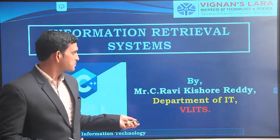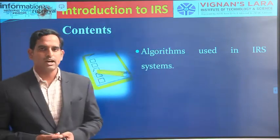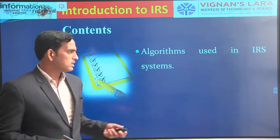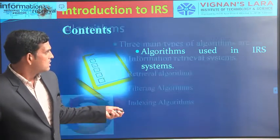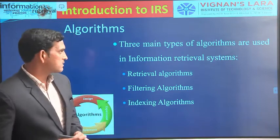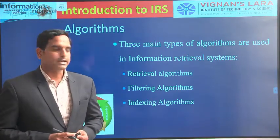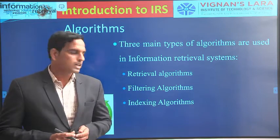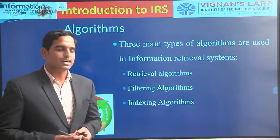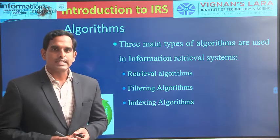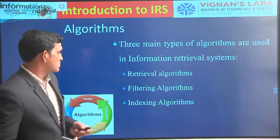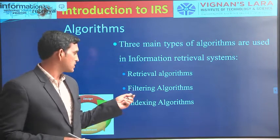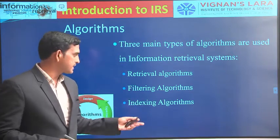As part of this session we will be looking at the algorithms used in information retrieval systems. We will have three main types of algorithms: the first is retrieval algorithms, the second is filtering algorithms, and the third is indexing algorithms. We will be looking at each one by one.